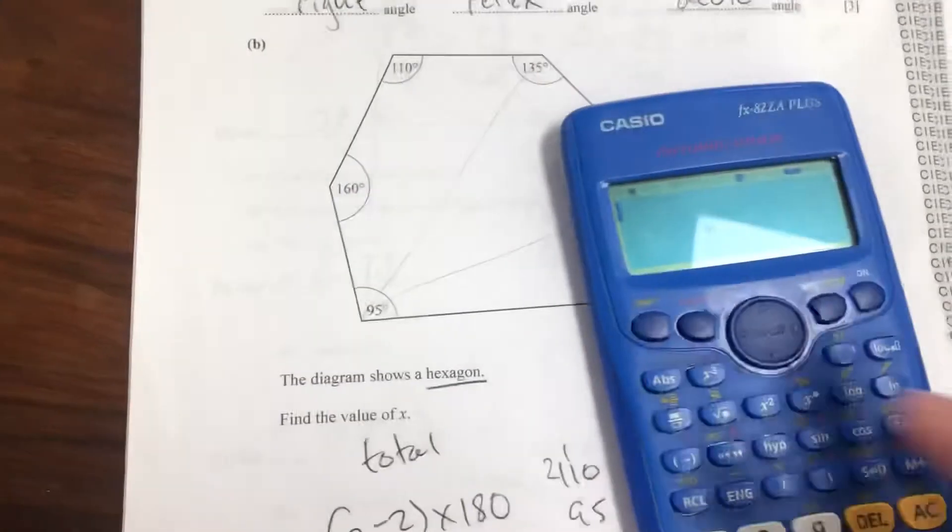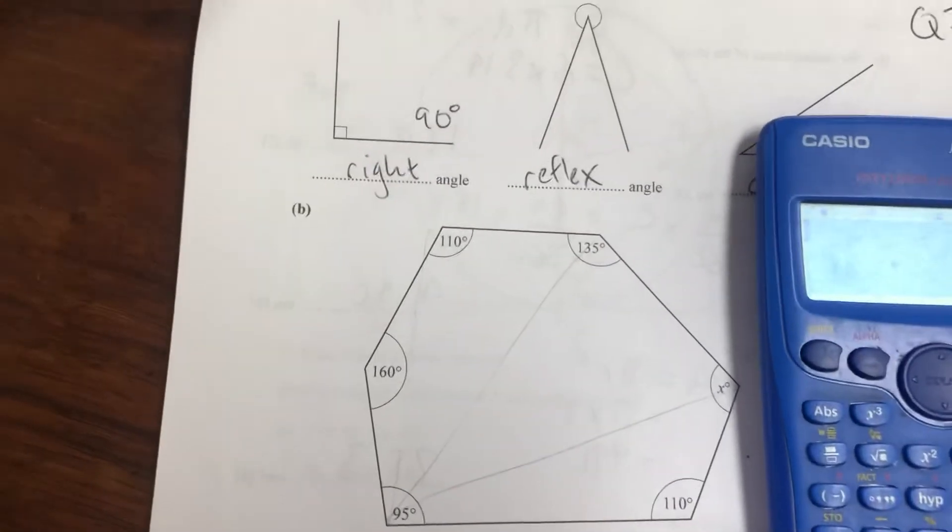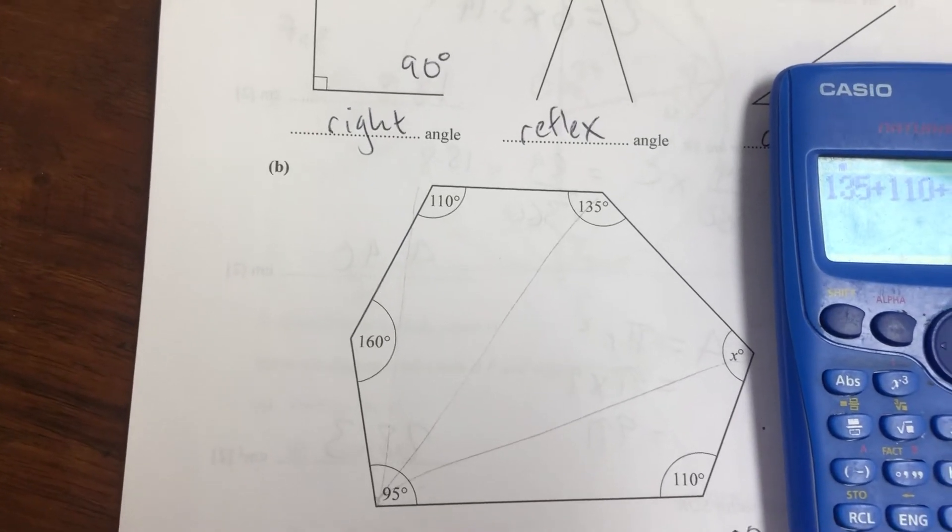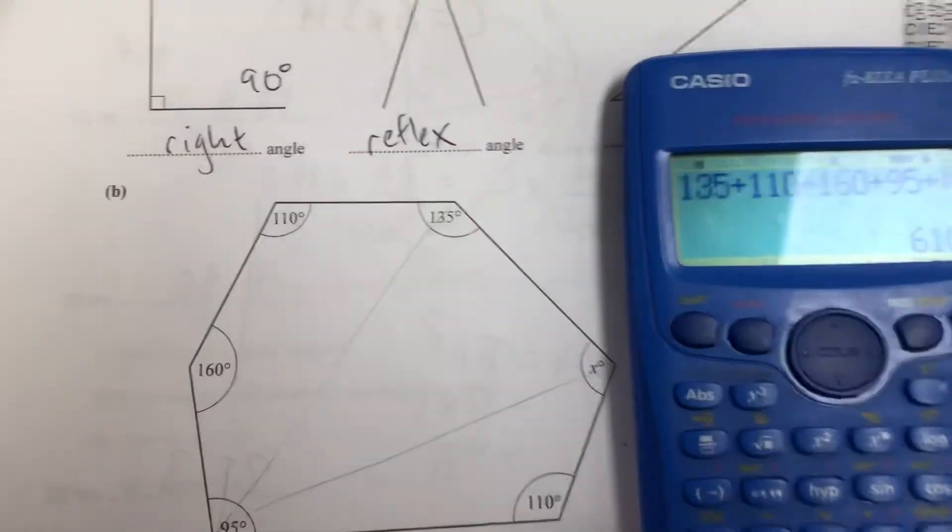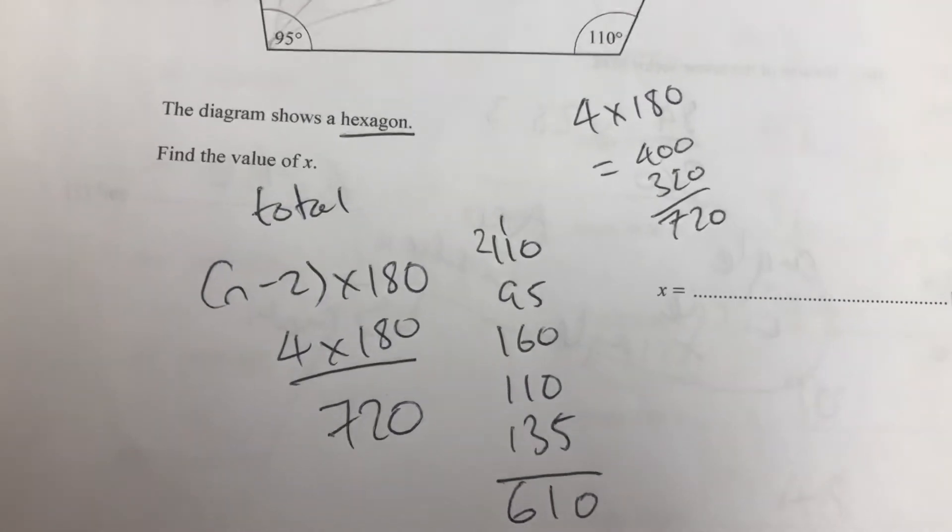Again, it is a calculator paper, so do check, do all that addition with your calculator: 135 plus 110 plus 160 plus 95 plus 110, and it is 610. I do like to show the math that's going on behind it, and also if you don't have a calculator, you're not in dire straits.